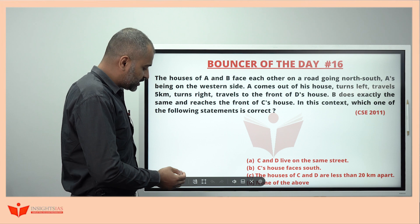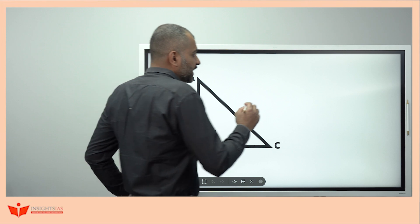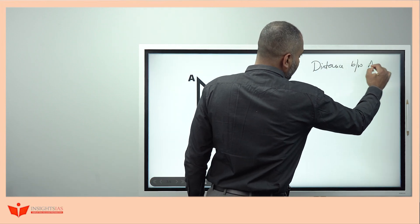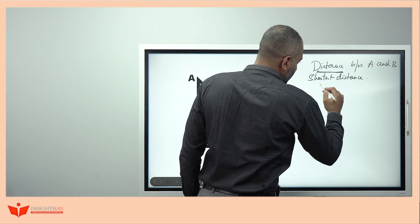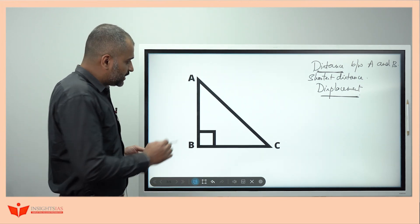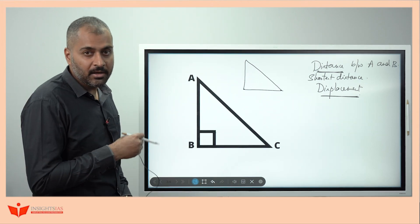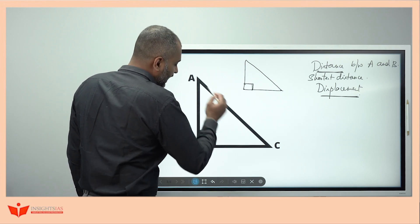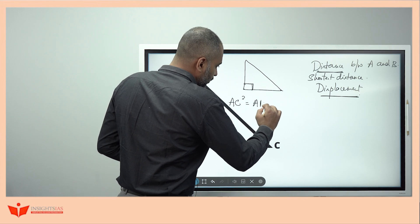Before going to this question, let's take some background. This question is chosen from the directions and distance topic. In most direction questions, the distance between two points means the shortest distance. The shortest distance between two points is also called displacement. Now consider a right angle triangle A, B, C. Do not assume a triangle is a right angle triangle unless you see the right angle marker. For a right angle triangle with sides AB, BC, and AC, we can apply the Pythagoras theorem: AC² = AB² + BC².